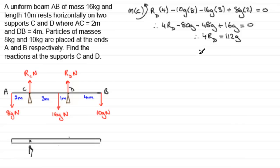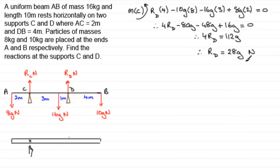Dividing both sides by 4, we end up with the reaction at D equals 112G divided by 4, which is 28G Newtons. If you wanted to take this further, just use the appropriate value of G — say G is 9.8 — and figure out what 28 times 9.8 is. But I'm just going to leave it as the exact value, 28G Newtons.